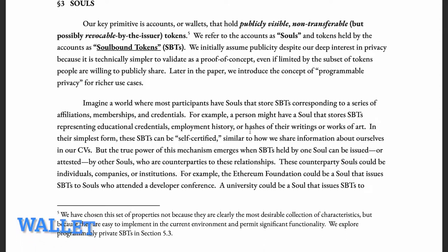Souls will hold public, non-transferable NFTs. But there could be a need to have private SBTs as well, such as for medical history. If we have too many public NFTs associated with a wallet, it could be easy to identify an individual and that individual could be judged by social norms. So we might have to find a balance between public and private NFTs. Authors note that public tokens will initially be easy to validate as a proof of concept, and in later sections they also talk about programmable privacy for use cases like medical history.